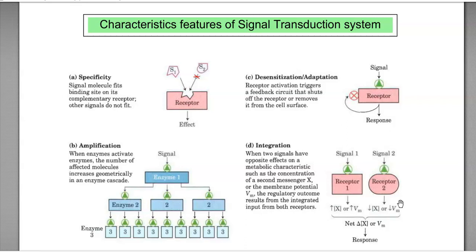What is specificity? A signal molecule fits to the binding site on its complementary receptor, so that no other signal molecule will fit there. For example, in this image, the pink colored thing is a receptor. The S1 is a signal molecule which can exactly fit here in this place. However, S2 cannot fit. So that kind of specificity between the receptor and the signal is important.